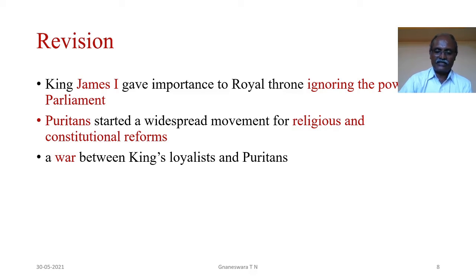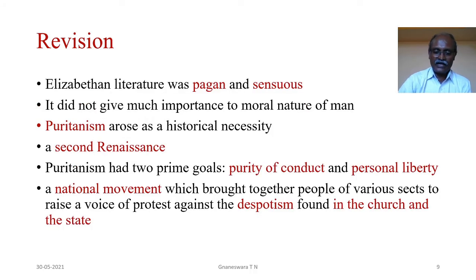To recap: there was a war between the king's loyalists and Puritans from 1642 to 1649 — this is the Civil War. The Renaissance had exercised great influence on Elizabethan literature, which was essentially pagan and sensuous and did not give much importance to the moral nature of man. Therefore, Puritanism arose as a historical necessity. The Puritan Movement may be regarded as a second renaissance. Puritanism had two prime goals — purity of conduct and personal liberty — and it was a national movement which brought together people of various sects to protest against despotism in the church and the state.